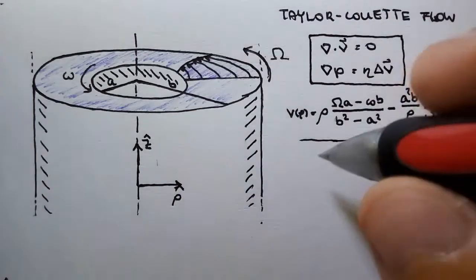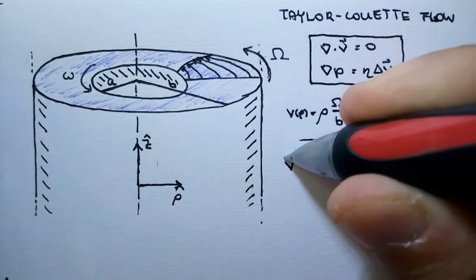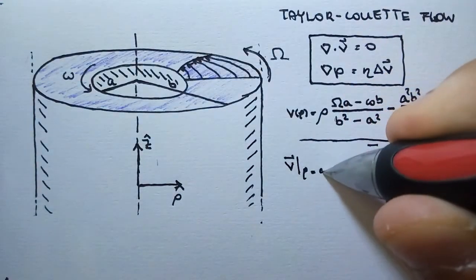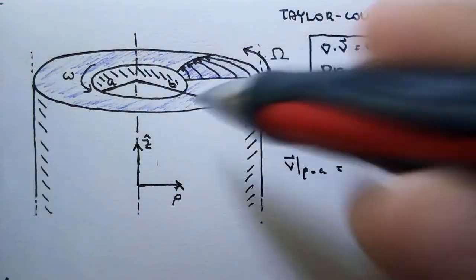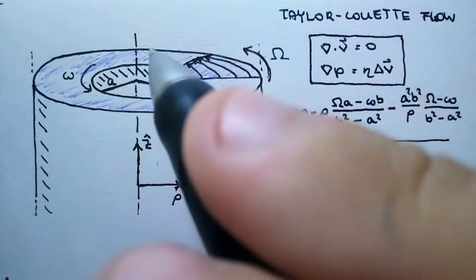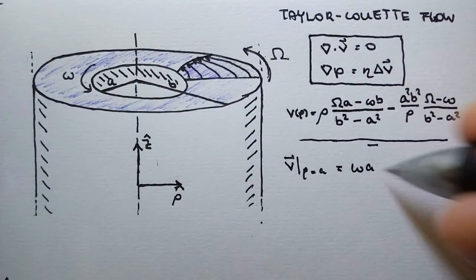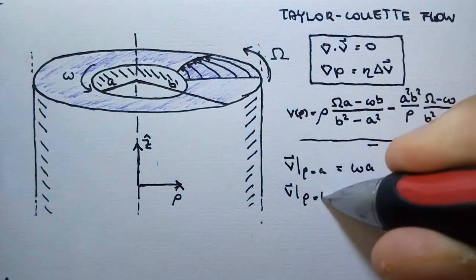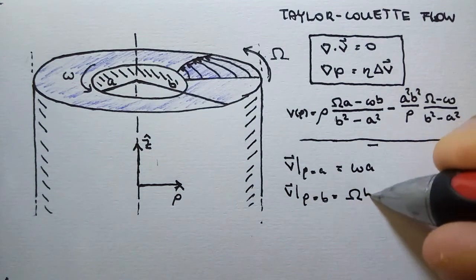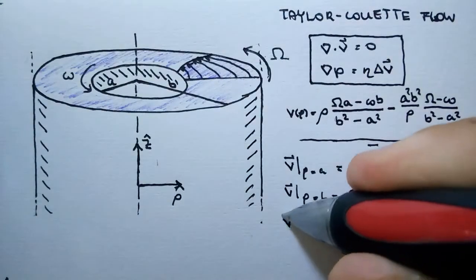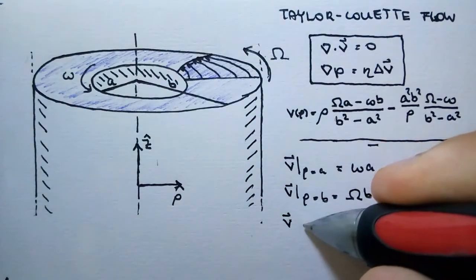First, let's state the boundary conditions. The first boundary condition is that the velocity at ρ = a must be ω·a, and the velocity at ρ = b must be Ω·b.